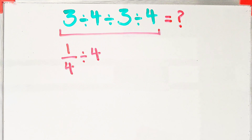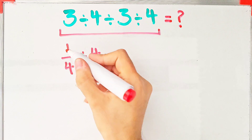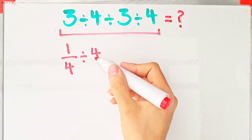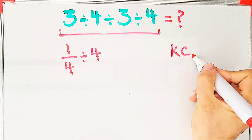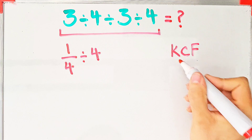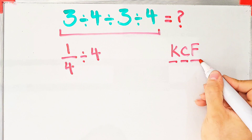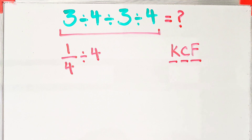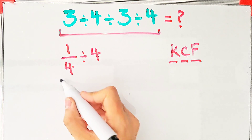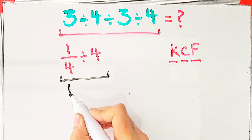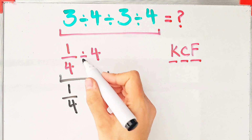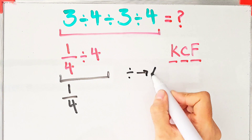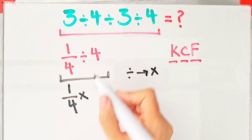Again we have a fraction divided by a number. To solve this part we need to follow the KCF rule. According to this rule, we keep the first fraction as it is, then we change the division sign to the multiplication sign, and then we flip the second number. Now we have 1 over 4 times 1 over 4.